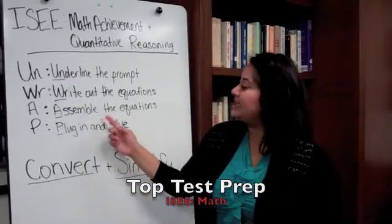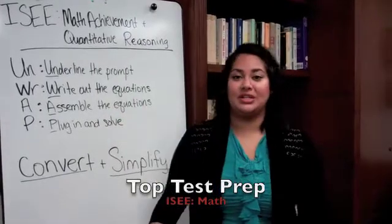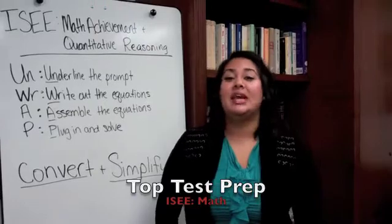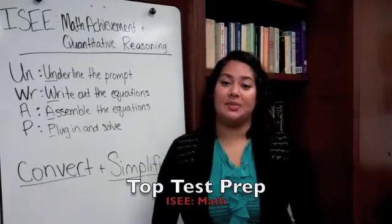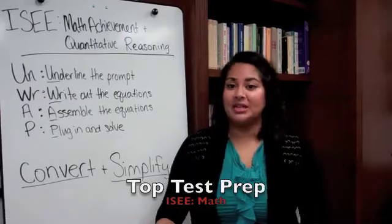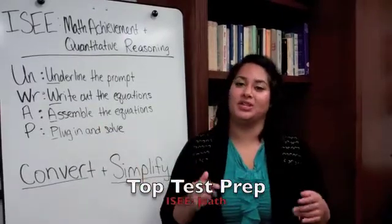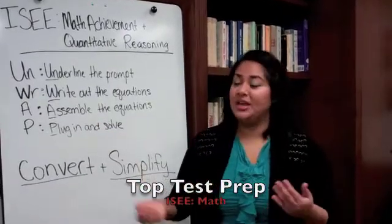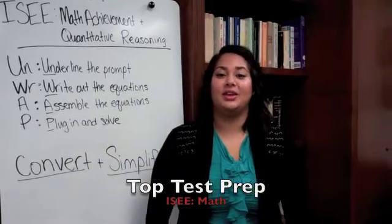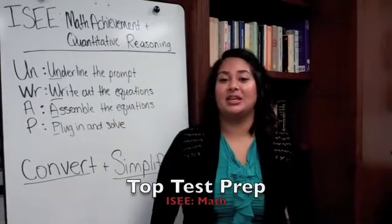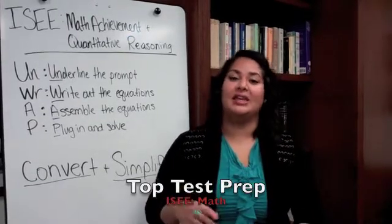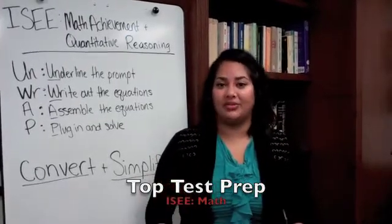Third is assemble — assemble the equations. This is especially helpful in a multi-step problem. Say you have to find the probability of something and also multiply. Which comes first? Assembling will help you put the equations in order. And finally, plug in and solve. At the end of the question, the test might give you that x equals six, and you have to plug it in and then you'll get whatever answer they're looking for.